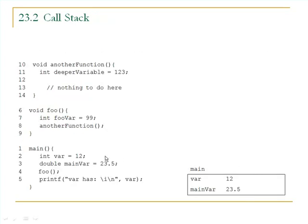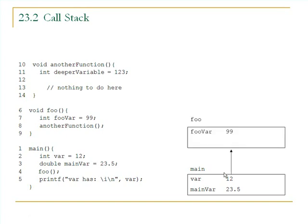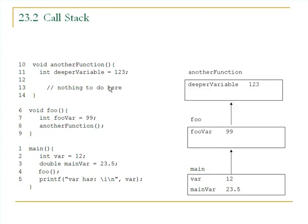Let's have a look at some simple code. Here's the main function with two variables declared — var and main var. When we call another function, foo, we go into that function and another piece of memory is stacked on top. The memory there has the variables available in foo. When we call yet another function, the stack gets deeper and deeper, and those variables are available to you on the stack.